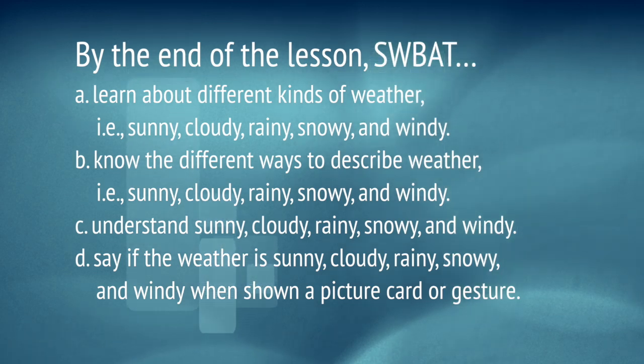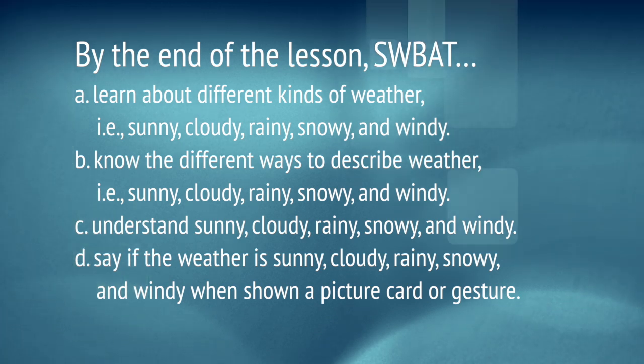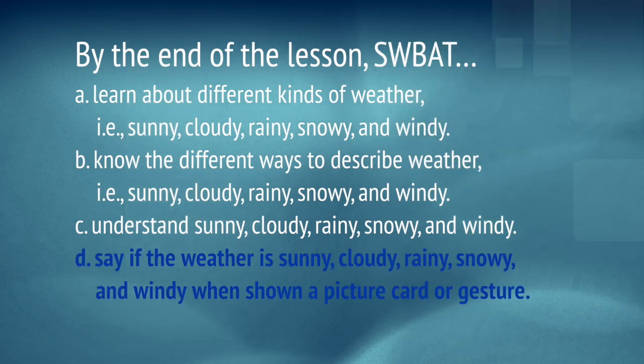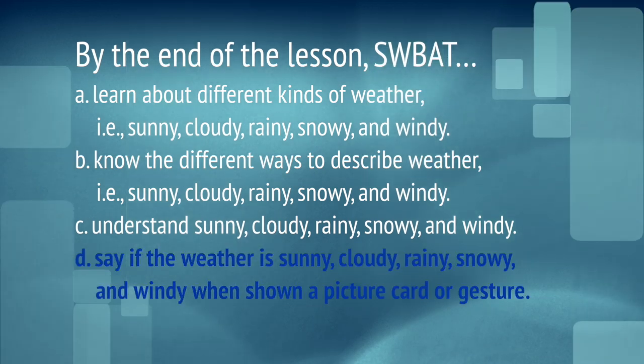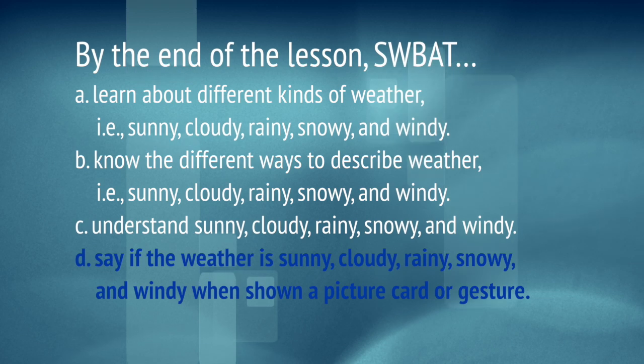Which objective is well written? Correct! The answer is D. By the end of the lesson, students will be able to say if the weather is sunny, cloudy, rainy, snowy, and windy when shown a picture card or gesture. This is a concrete and observable objective. At the end of the lesson, you will be able to assess if your students have achieved this objective. This is the mark of a well-written objective.